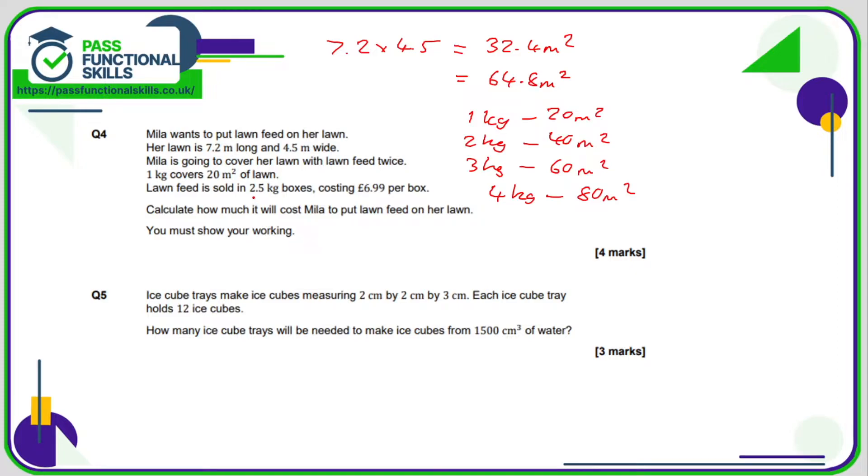Lawn feed is sold in two and a half kilo boxes, so she's going to need two of these boxes. In total she'll be getting five kilos, so way too much lawn feed, but that's just the way it goes. She needs two boxes at £6.99 per box, so £6.99 multiplied by two is £13.98.